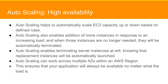Next is Auto Scaling, which helps you automatically scale EC2 capacity up or down based on defined rules. It enables adding more instances in response to increasing load, and when those instances are no longer needed, they can be automatically terminated. Auto Scaling can work across multiple availability zones within an AWS region, ensuring that your application will always be available no matter what the load is.